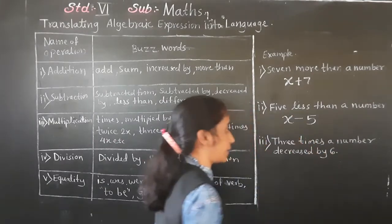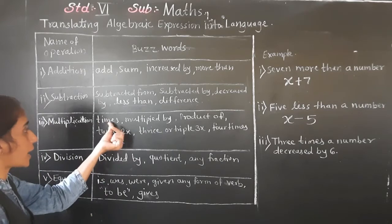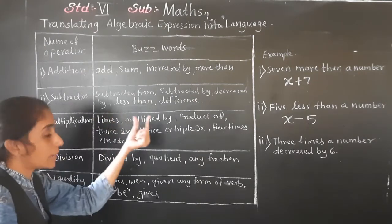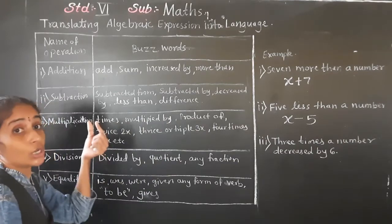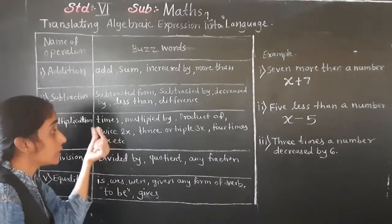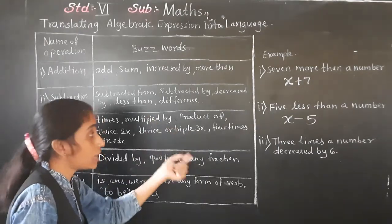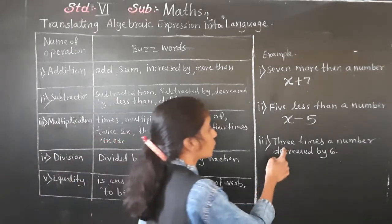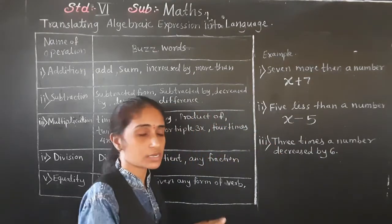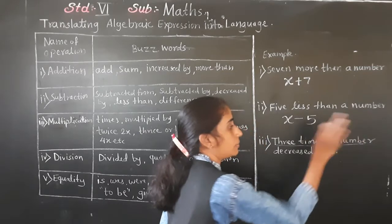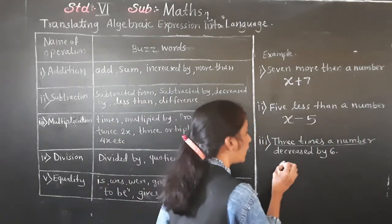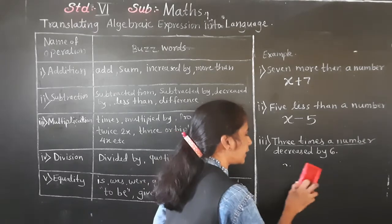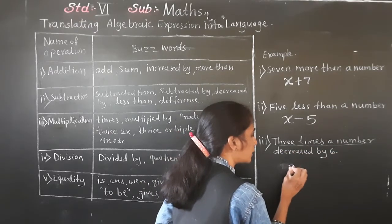Example three: 'Three times a number.' The word 'times' is used for multiplication. A number we consider as x. Three times a number means three multiplied by x, which equals three x.